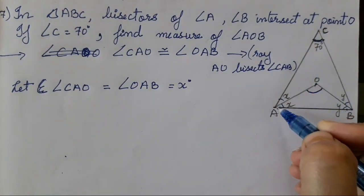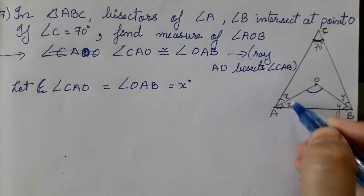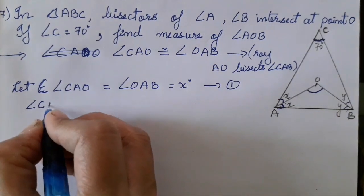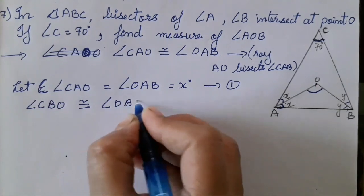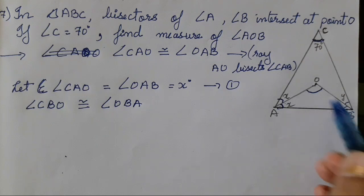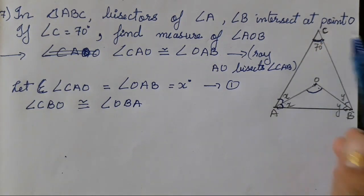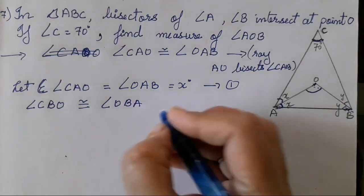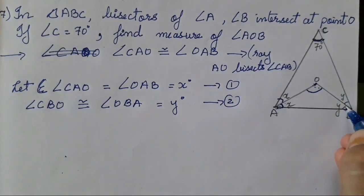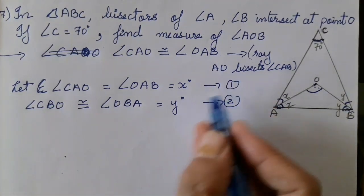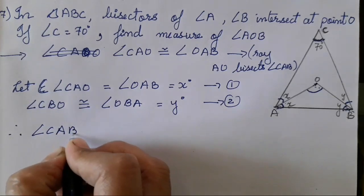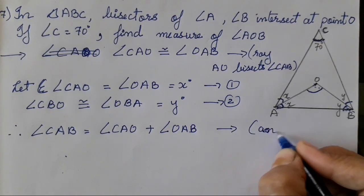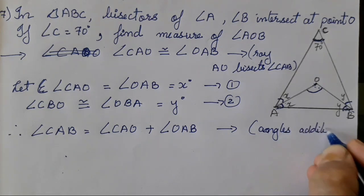Since AO bisects angle CAB, angle CAO equals angle OAB; let each equal X°. Similarly, since BO bisects angle CBA, angle CBO equals angle OBA; let each equal Y°. Both bisector conditions are stated as reasons.